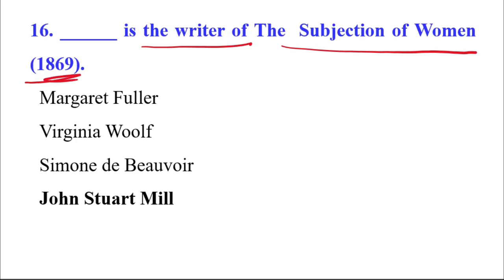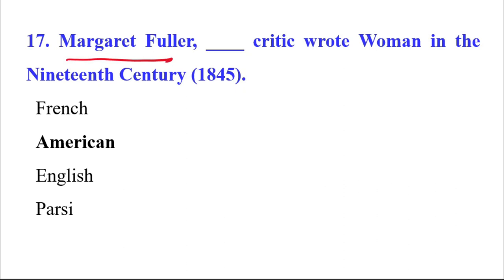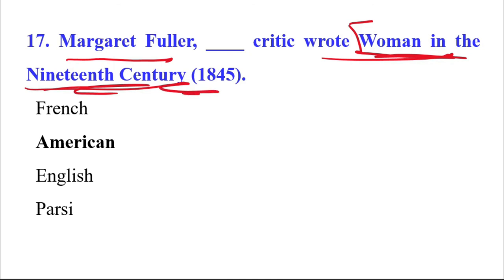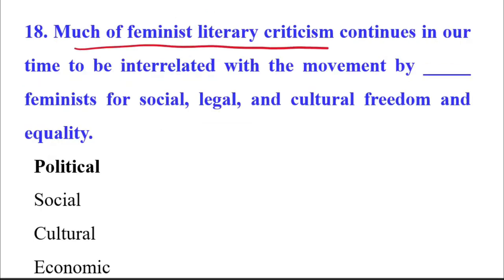The writer of The Subjection of Women — a masterpiece of feminist literature — is J.S. Mill, that is John Stuart Mill, a male writer. It was published in 1869. The next question: Margaret Fuller, a critic from America, wrote Woman in the Nineteenth Century, published in 1845.